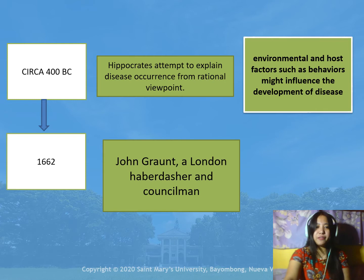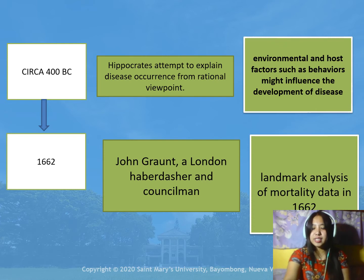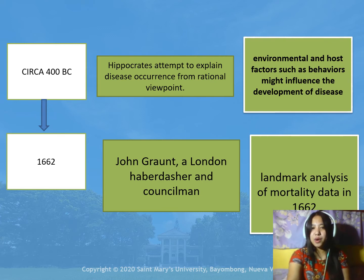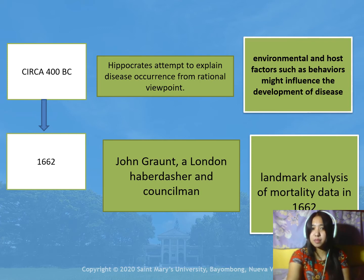another person involved here is John Graunt, a London haberdasher and councilman. His work is a landmark analysis of mortality in 1662. In this work, he quantified patterns of birth, death, and disease occurrence, noting disparities between males and females, high infant mortality, urban and rural differences, and seasonal variation.